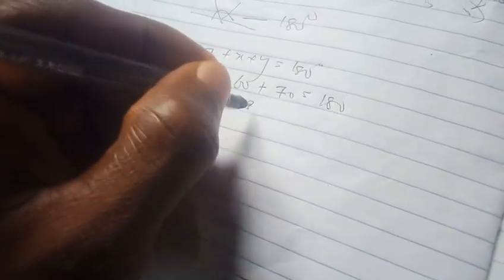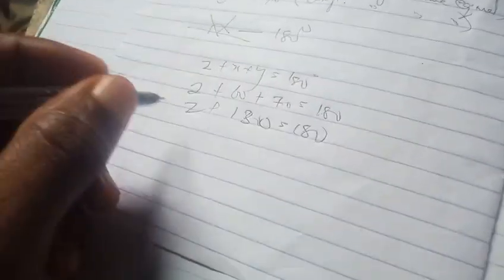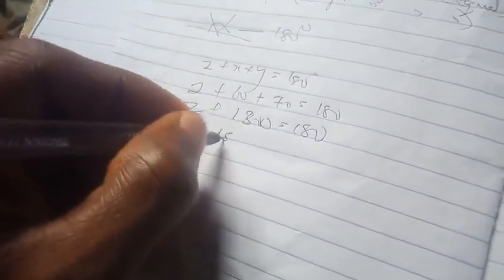Therefore, looking for Z: Z plus X, that's 60 degrees, plus Y is 70, equals 180. So here we have Z plus 130 equals 180. Then Z, collecting like terms, is equal to 180 minus 130. This is 50 degrees. So Z angle here is 50.